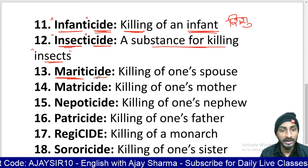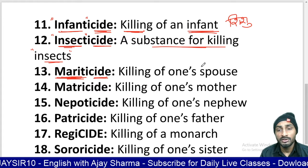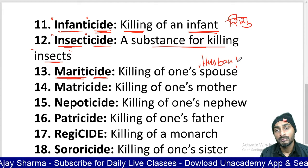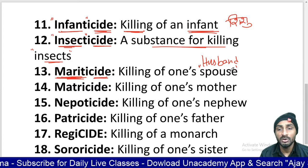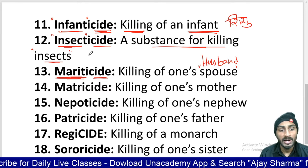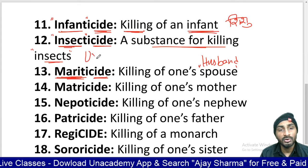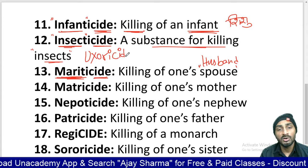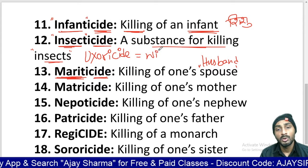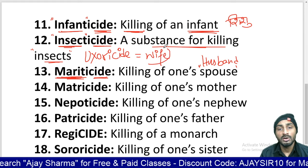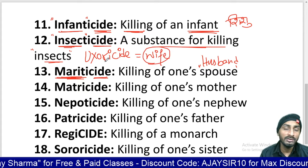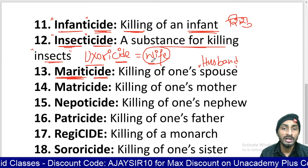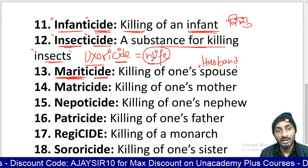'Mariti' is a root for spouse or one's husband. So mariticide means killing of one's husband. There is another word: uxoricide. Uxoricide means killing of one's wife. 'Uxor' is a Latin root for wife, and '-cide' is for killing. So uxoricide means killing of wife.